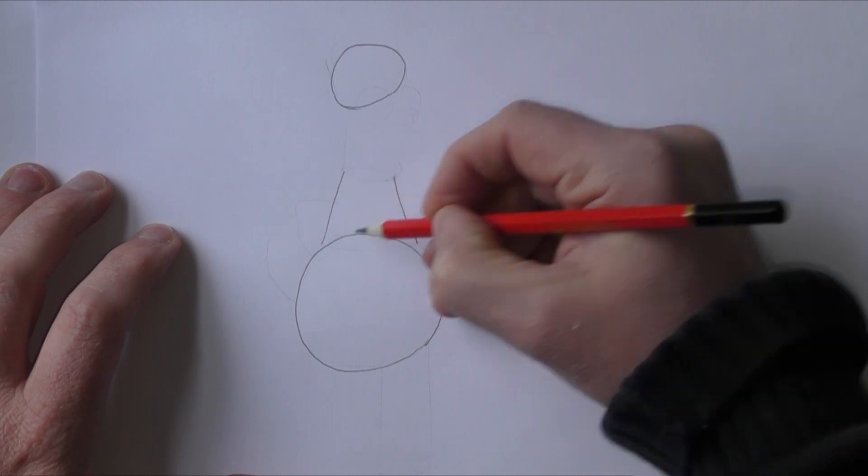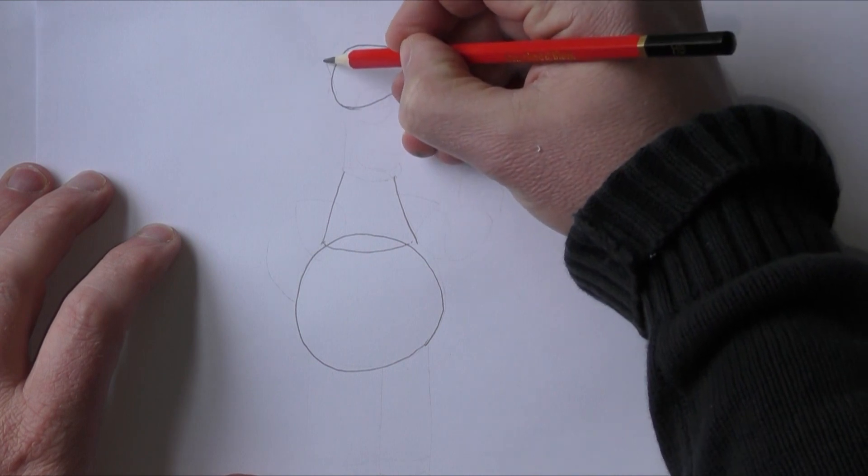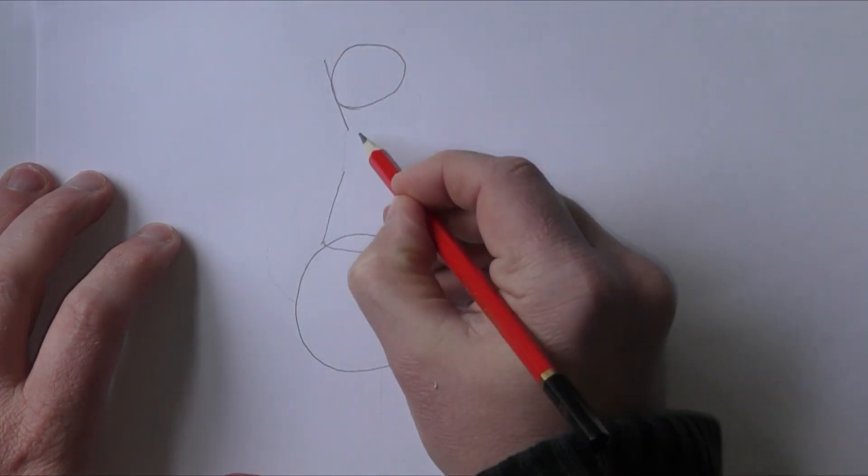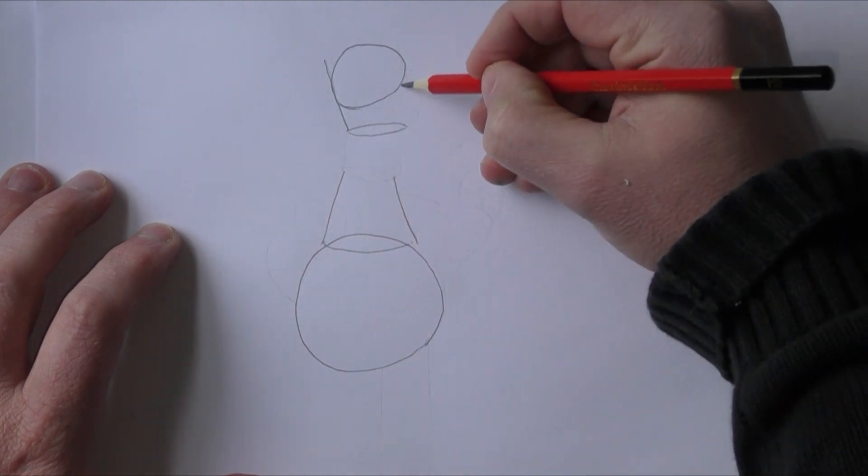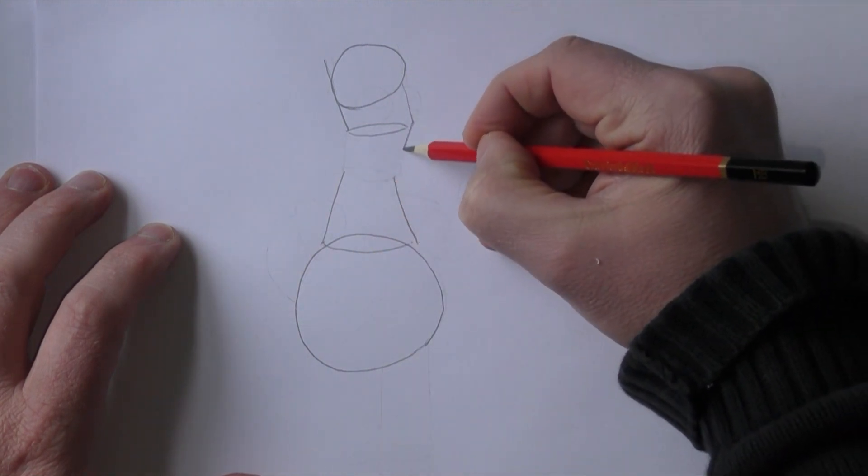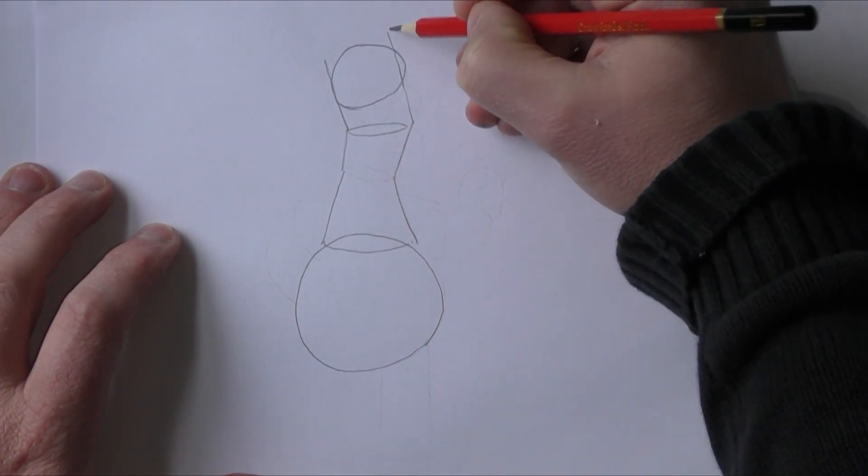Now the thing to remember when you're drawing these characters is it's basically just drawing basic shapes to start with to get the figure of the characters and joining them together. So just keep drawing these circles, drawing these lines and fitting them all together, and you can start to see there that's the basic shape of Homer.